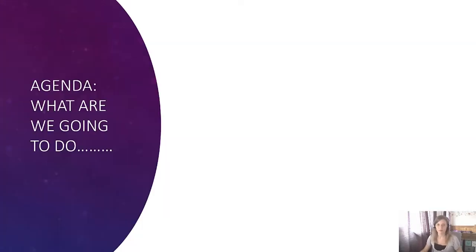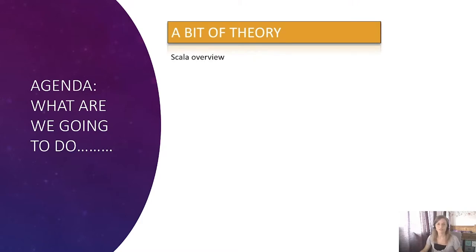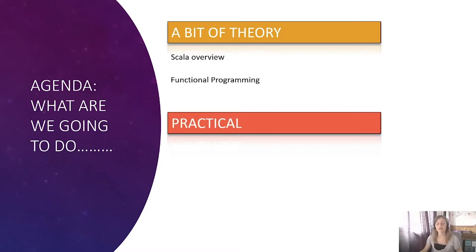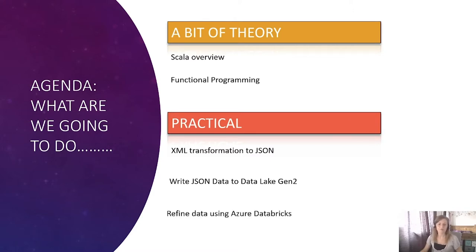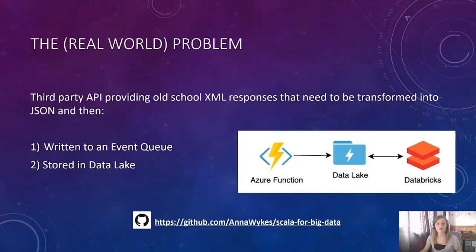So what are we going to do? We are going to do a bit of theory — a Scala overview, some functional programming, some practical XML transformation into JSON, then we're going to write the JSON data to Data Lake Gen 2, and then refine our data using Azure Databricks. We're going to have a real-world problem taken from my day job — a third-party API with old-school XML responses that needed transforming into JSON, then writing to an event queue and stored in a data lake. There is a link to the GitHub repo with all the code I demo today. Essentially, we'll be going from an Azure function into a data lake into Databricks.